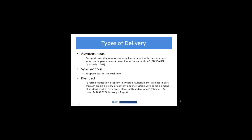In broad brush strokes, there are generally considered three different types of delivery. Asynchronous supports people being online and connected and able to contribute, but at a different time, different place, different space — they don't have to be together all at the same time. Synchronous, of course, is the opposite, supporting learners in real time, and there are different examples of each.